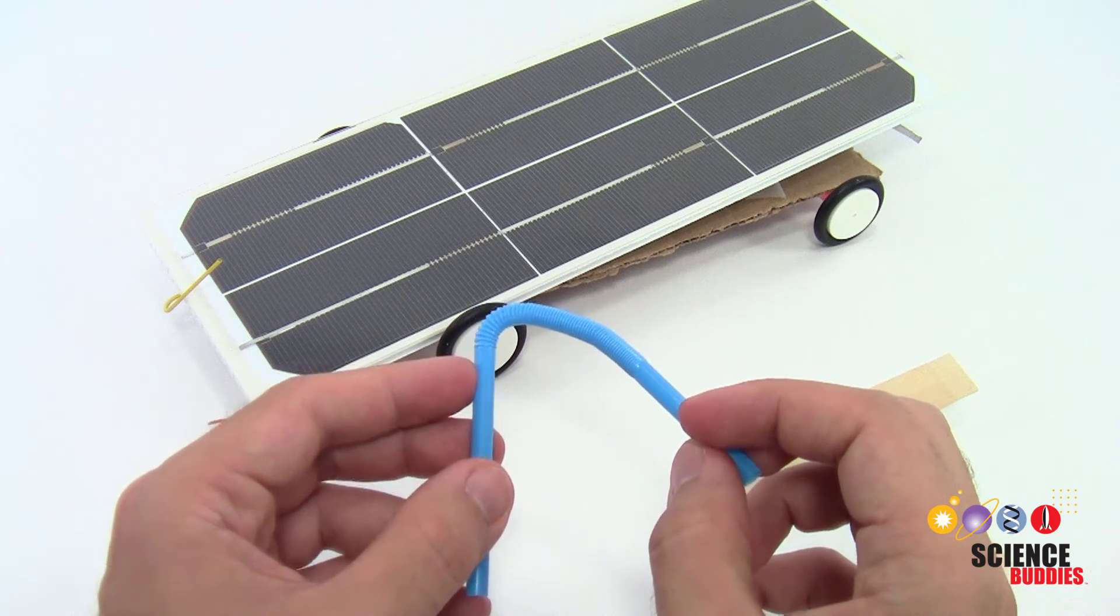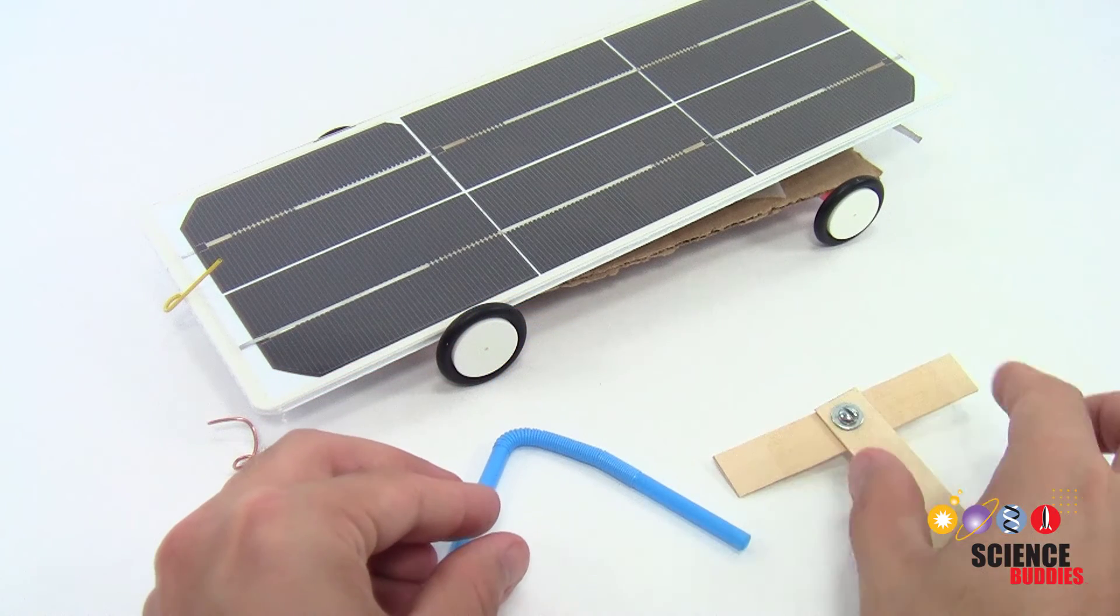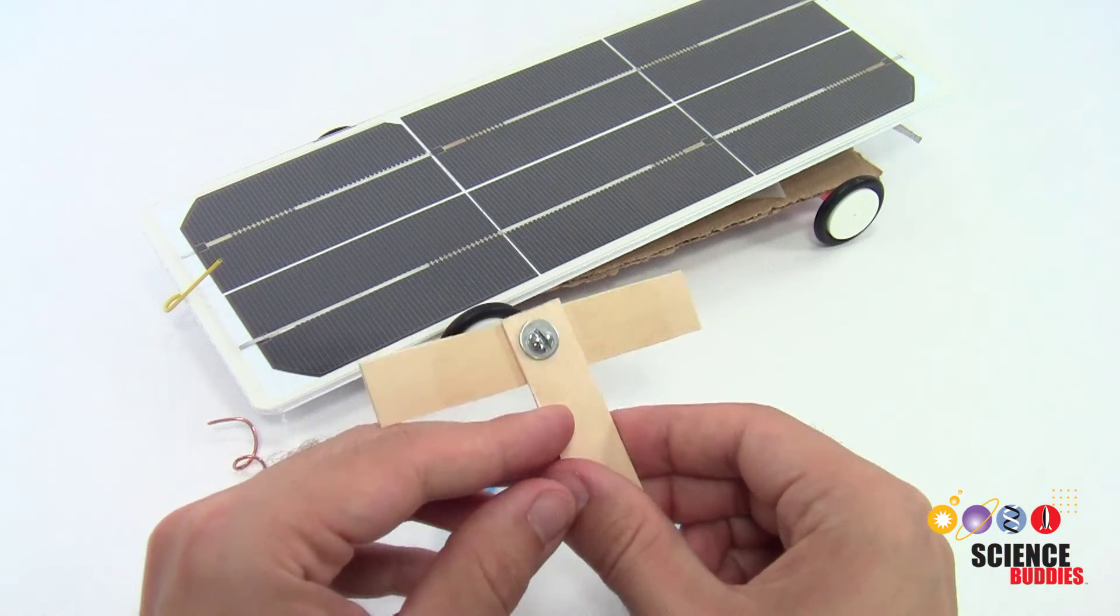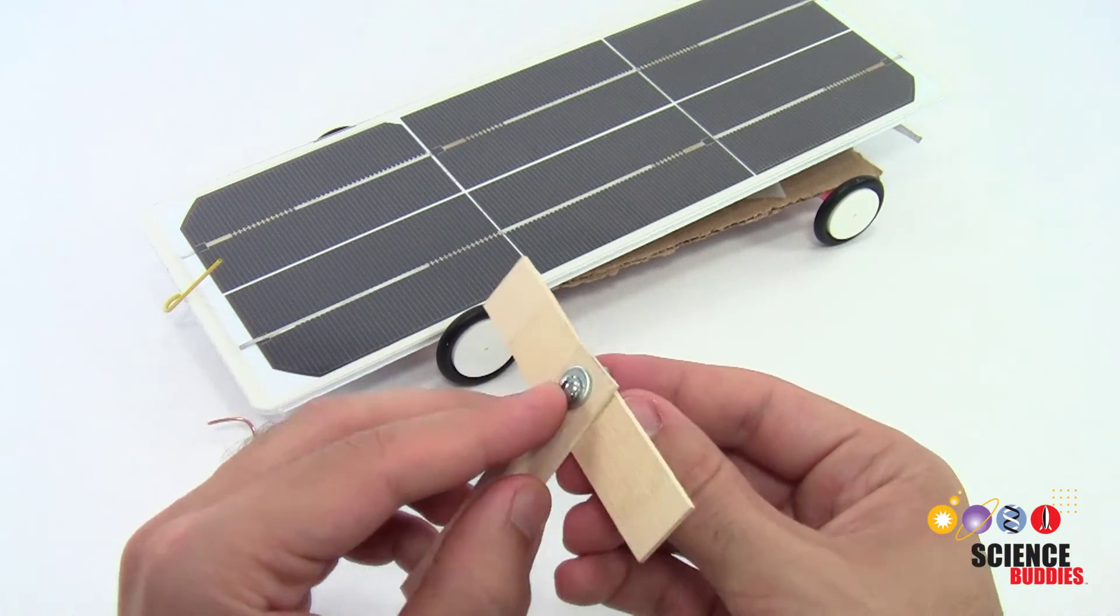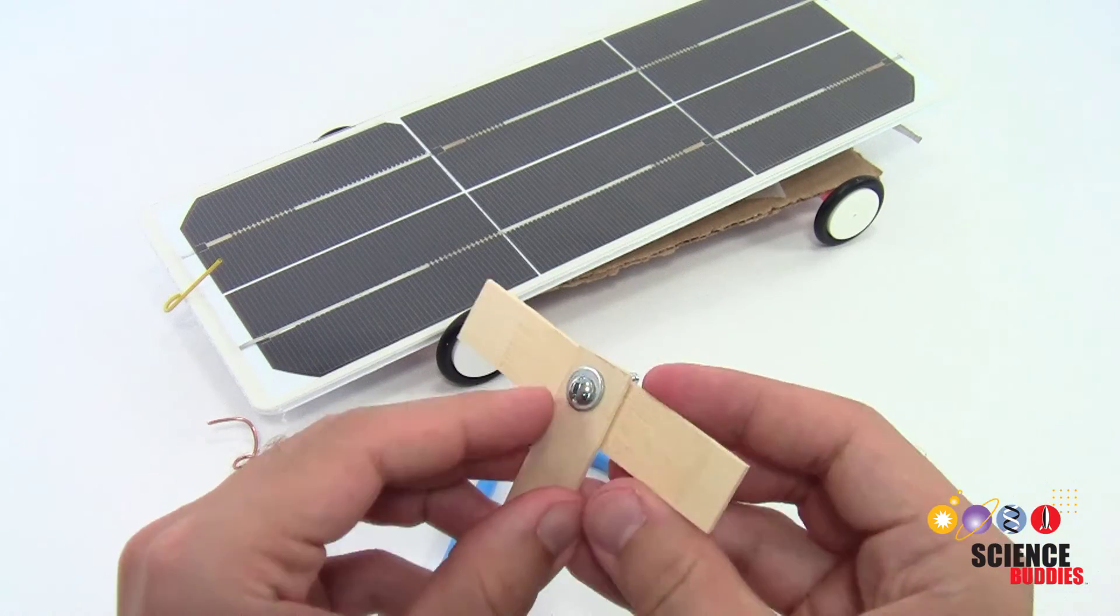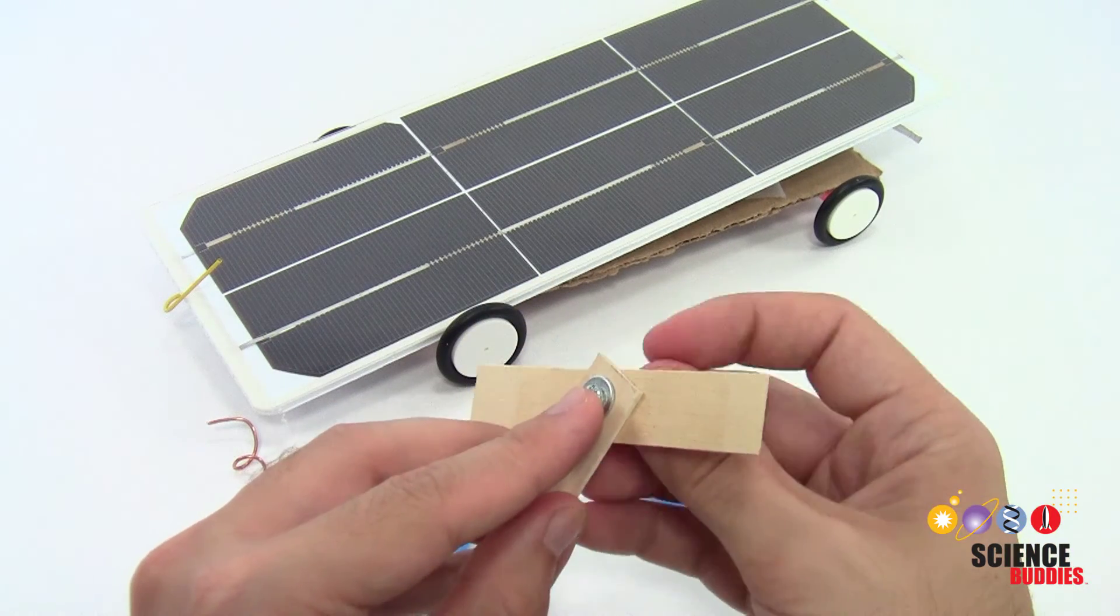If you are using wood to build your car, you can make a rotating joint by drilling holes in two pieces of wood and connecting them with a screw and a wing nut. Loosen the nut to adjust the angle of the two pieces and then tighten it again to hold them in place.